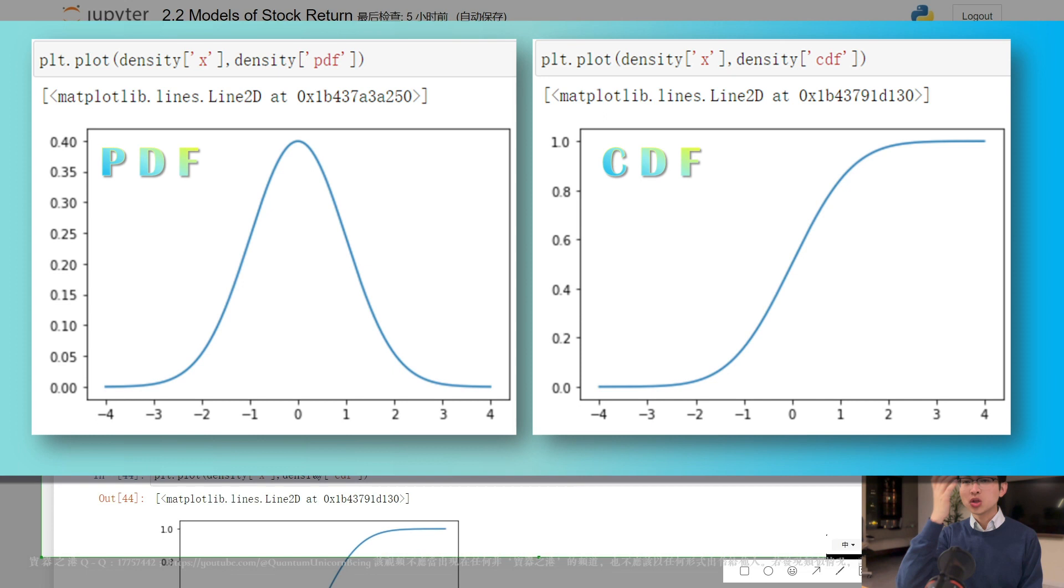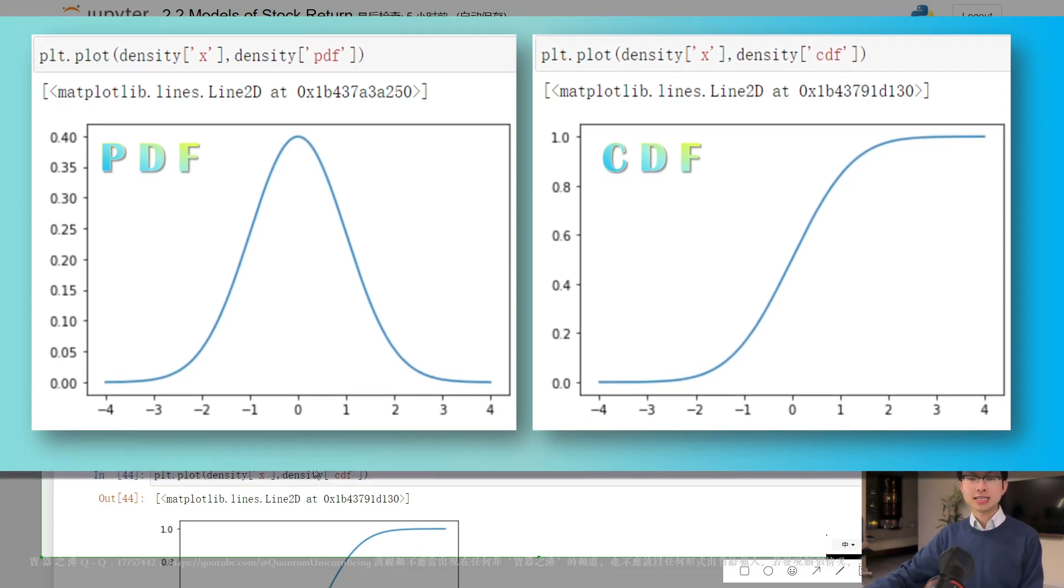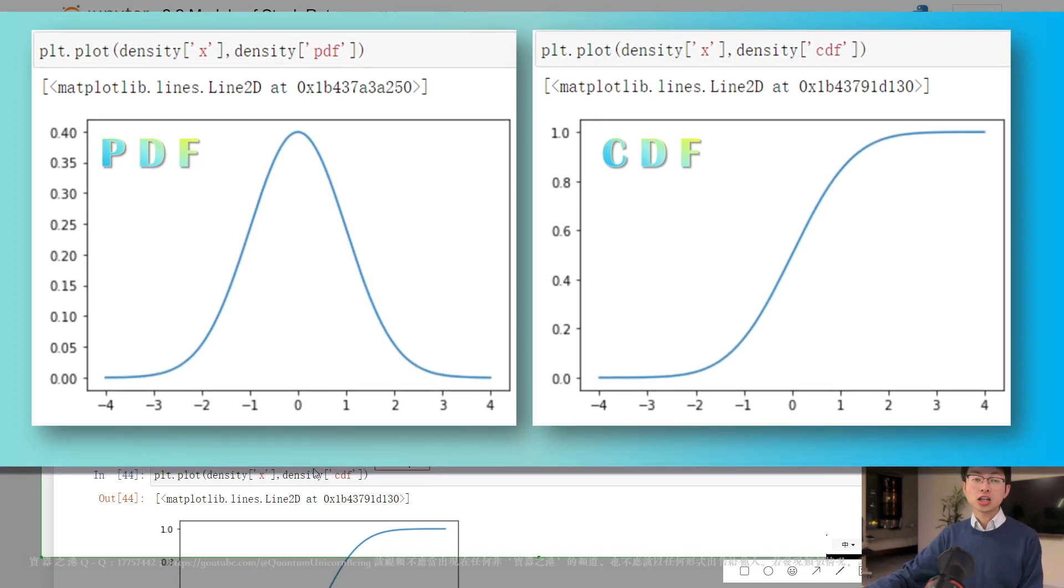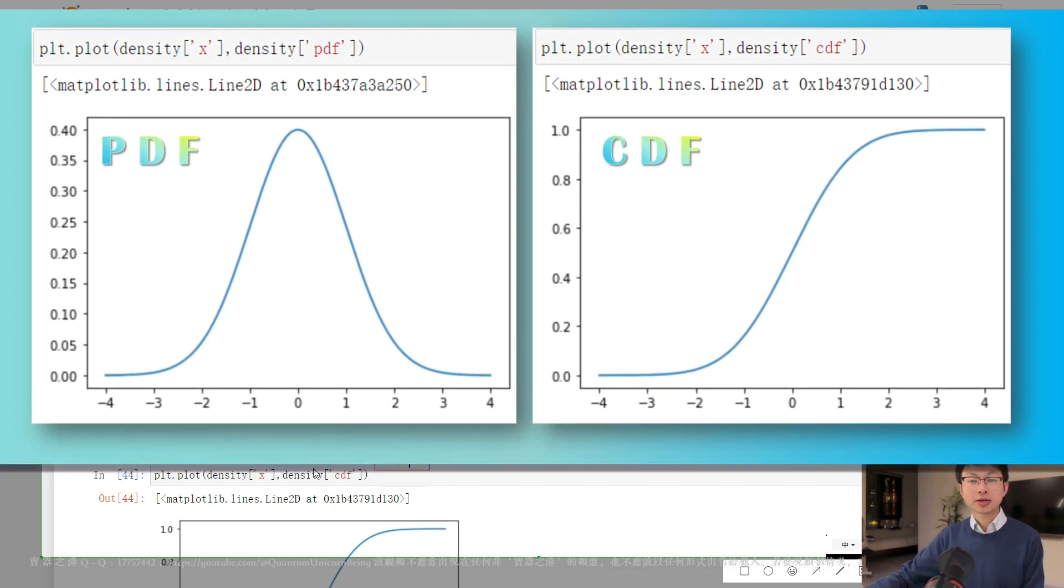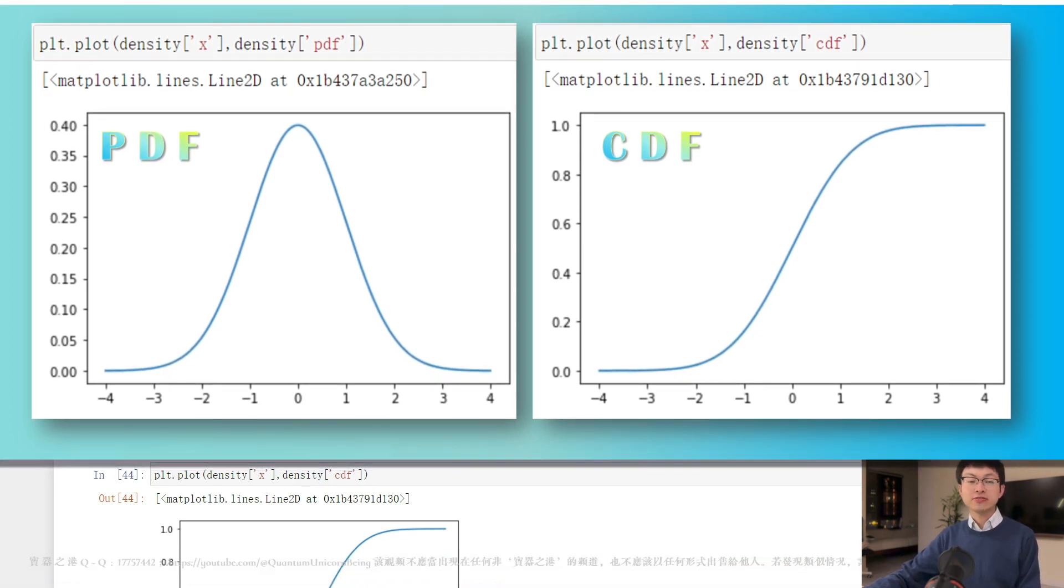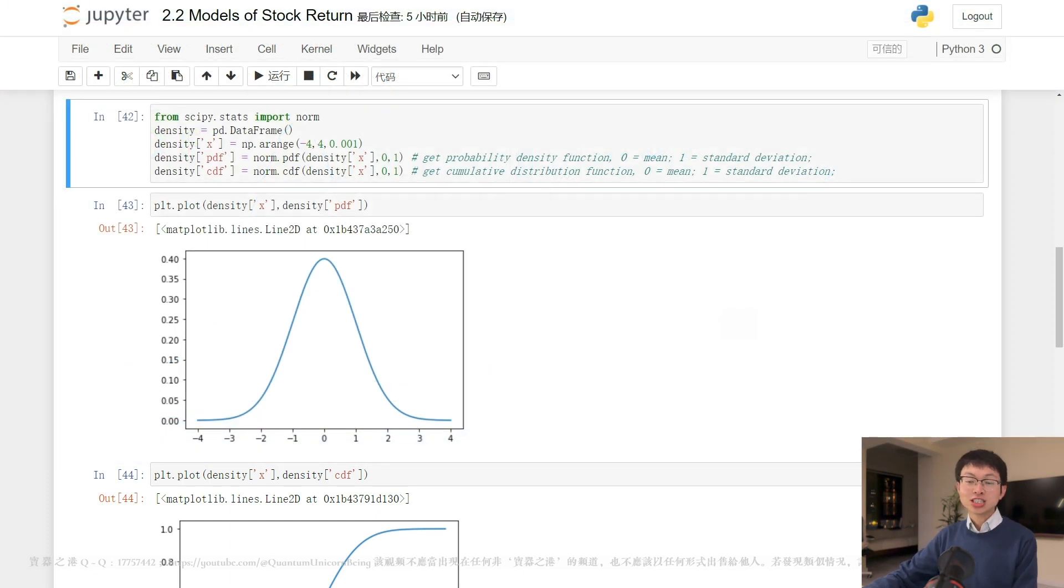However, we don't know the true mean and standard deviation of this random variable. Instead, we rely on a large collection of historic data returns to estimate the mean and standard deviation. Although these estimates are not identical to the parameters of a normal distribution, they are sufficiently close.